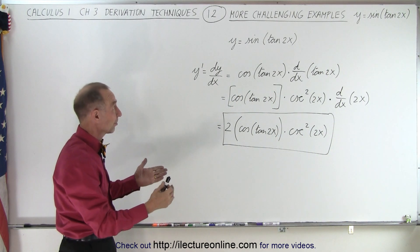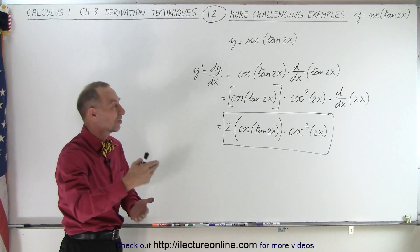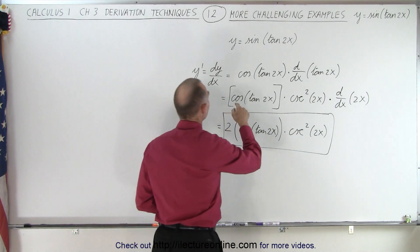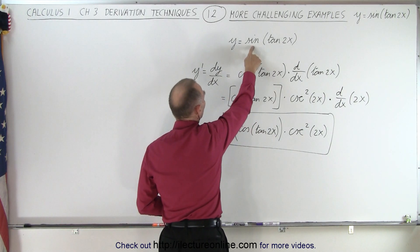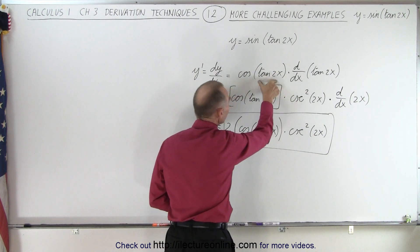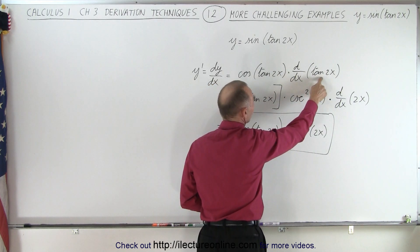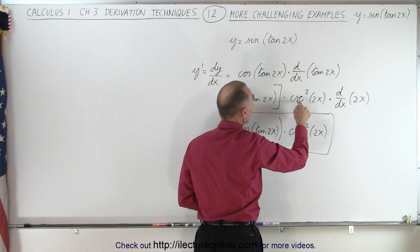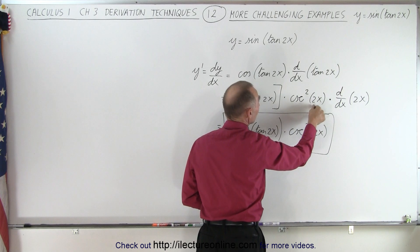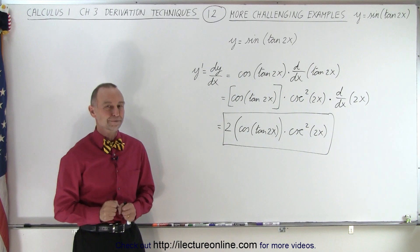Now notice, it seems simple, sine of the tangent of 2x, but we need to make sure that we go to this systematic step. So again, the derivative would be, the derivative sine is the cosine of the same argument, times the derivative of the argument, which is the tangent of 2x. The derivative of the tangent of a function is going to be the cosecant square of that same function, but then we have to take the derivative of the 2x as well. And that is how it's done.